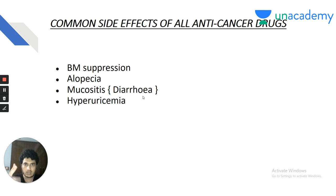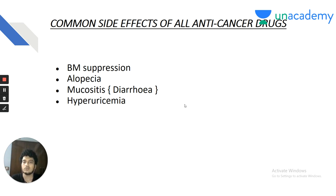Bone marrow failure, diarrhea and alopecia are universally seen with all anti-cancer drugs. Increased cell turnover leads to hyperuricemia, which is also a common side effect. Universally all anti-cancer drugs cause bone marrow suppression, alopecia, mucositis leading to diarrhea, and hyperuricemia. This is not something to mug up — it follows logically from the physiology.